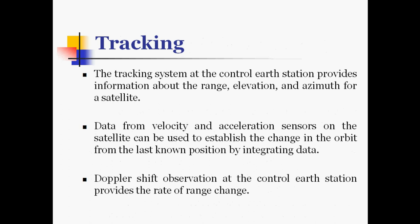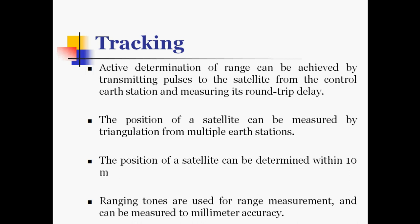The next system is the tracking system. The tracking system at the control earth station provides information about three parameters: range, elevation, and azimuth angle of the satellite. Data from velocity and acceleration sensors on the satellite can be used to establish the change in orbit from the last known position by integrating the data. Doppler shift observations at the control earth station provide the data rate of range change. Active determination of range can be achieved by transmitting pulses to the satellite and measuring round trip delay. The position of a satellite can be measured by triangulation from multiple earth stations, determined within a 10 meter range. Ranging tones are used for range measurements and can be used to millimeter accuracy.